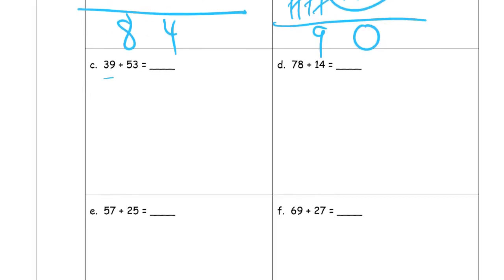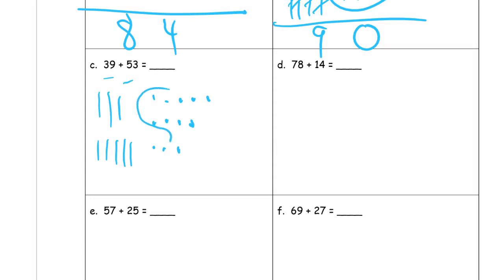So here we have 39 plus 53. 39 is three tens and one, two, three, four, five, six, seven, eight, nine ones. Please use five-group rows when you're drawing your quick tens and your ones. 53 — one, two, three, four, five tens and one, two, three ones. It just makes so many things easier and it helps you avoid making mistakes.